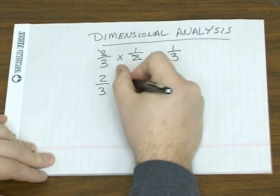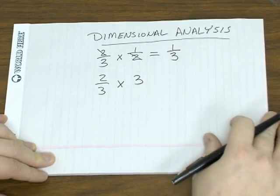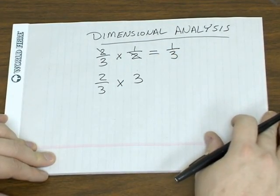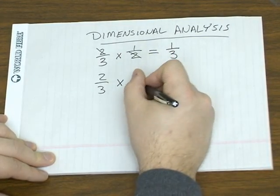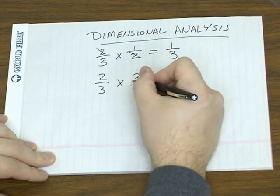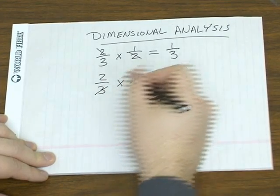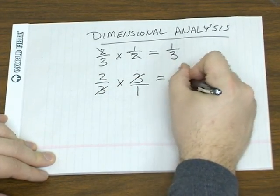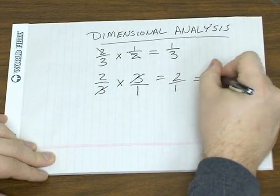Or let's say you were multiplying 2/3 times 3. Remember a whole number can be written as that number over 1 in fraction form. So again, this time the threes are across from each other. So you get 2/1 or 2.